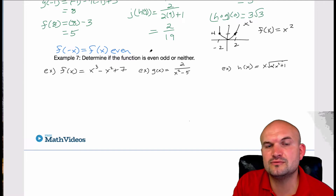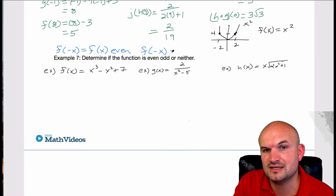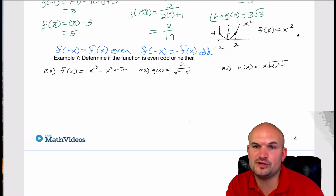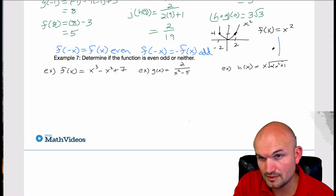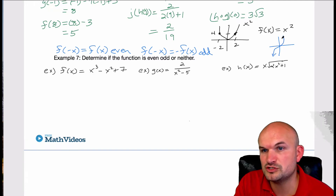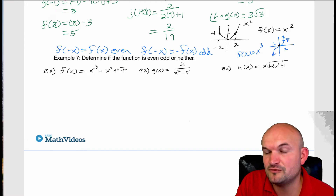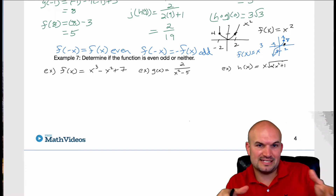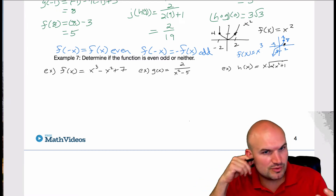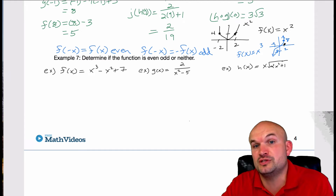Or, if we take a function and input the opposite value of x, and we get the opposite of f(x), then that function is said to be odd. For example, the cubic function is an odd function. If we look at f(x) = x³ and do two cubed, we get eight. But if we do negative two cubed, we get negative eight. That helps with our graphical approach, and I'm going to add the links so we can confirm our results.